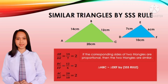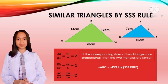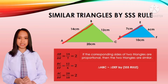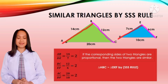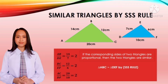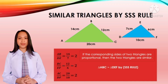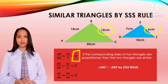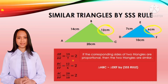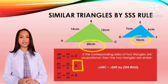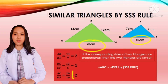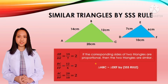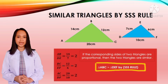Example: triangle ABC and triangle DEF. To determine if these two triangles are similar, let's find their matching sides: side AB and side DE, side BC and side EF, and side AC and side DF. Now let's compute their ratios. Side AB is 14 and side DE is 7, so 14 divided by 7 is 2. Side BC is 12 and side EF is 6, so 12 divided by 6 is 2. Side AC is 20 and side DF is 10, so 20 divided by 10 is 2. The ratios of all matching sides have the same values, therefore triangle ABC is similar to triangle DEF by SSS rule.